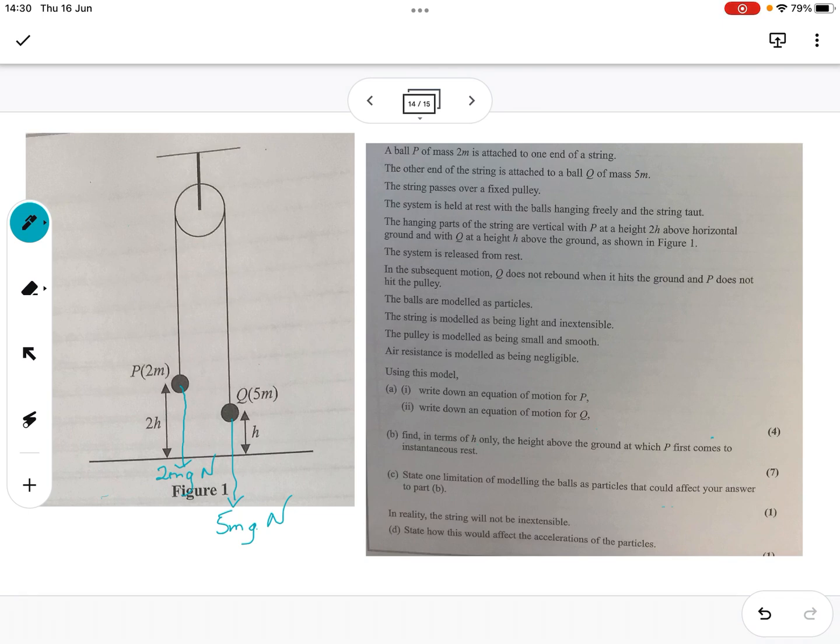Goes over a fixed pulley, doesn't say whether it's smooth, which is interesting. And the system is held at rest with the balls hanging freely and the string is taut, which means it's not going to suddenly make a movement and it's all ready to go. The hanging parts of the string are vertical with a height of 2H and H. Interesting system.